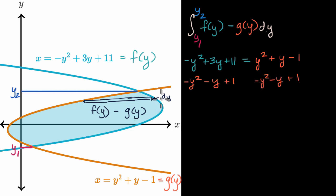What we are left with is -2y² + 2y + 12 = 0. Then I can factor out a -2 and get -2(y² - y - 6) = 0.